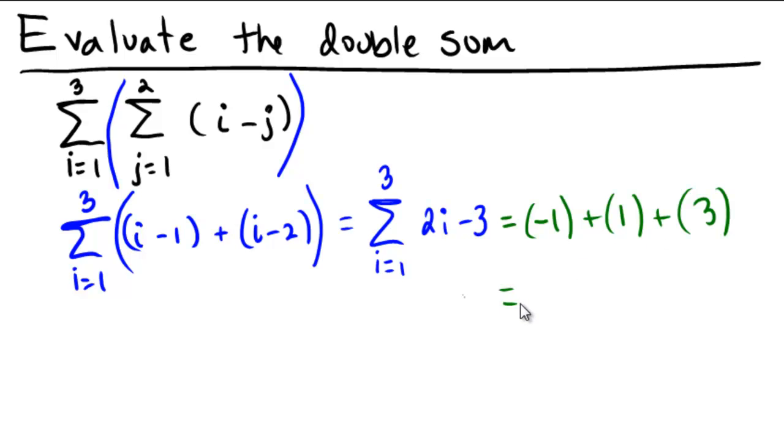Minus 1 plus 1 is 0, plus 3 is 3. And so that's our final answer to this double sum is positive 3.